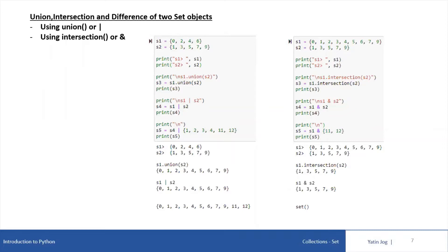As we have discussed, the set in Python is very much similar to the set concept of mathematics. So as in mathematics, we can do a union and intersection of two set objects in Python also. You can do a union using the union() method or you can use the OR symbol, and in case of intersection, you can use the intersection() method or you can use the AND symbol. In case of sets, the OR and AND symbols work as union and intersection operators — they are not bitwise OR and bitwise AND operators. This is important to remember.